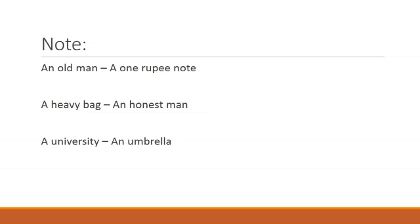Many people will say U is a vowel, and yes, U is a vowel. But take 'university' — it starts with a Y consonant sound, so you say 'a university.' Whereas 'umbrella' starts with a vowel A sound — 'umbrella, umbrella' — so you say 'an umbrella.' You cannot blindly go by the letter; it depends on the sound.